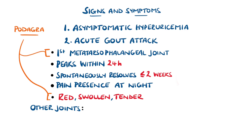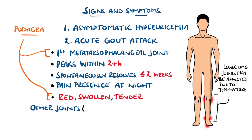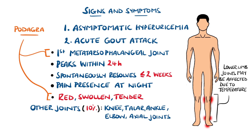Gout can affect other joints too, including the knee, talar, and ankle joints, and it is thought that the lower limb is more affected due to precipitation of urate crystals at lower temperatures. Having said that, it can affect any joint, including the elbow, and axial joints including the spine can be affected, but it is much more commonly found in peripheral joints.